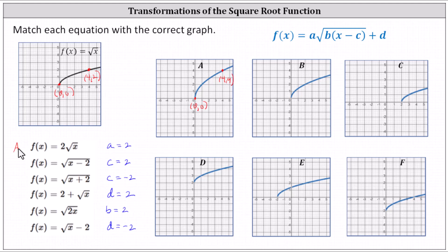For the second function, because c is positive two, the graph has been shifted right two units, which affects the x values. We would add two to the x values, or just analyzing the functions — notice only one is a square root function shifted right two units, which is graph C.